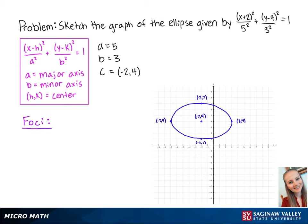In addition, we can also find the foci. We can do this by using the equation c² = a² - b², where c represents the distance from the center on the major axis. So for this problem, we have 5² - 3², which is equal to 16. So c is equal to √16, which is equal to 4.